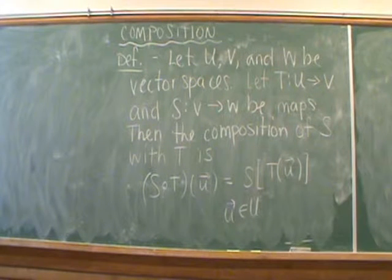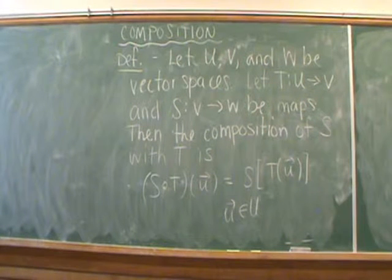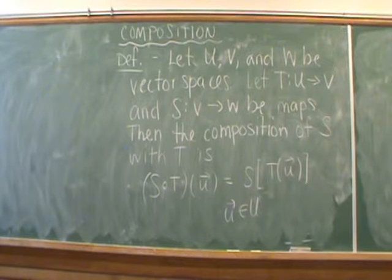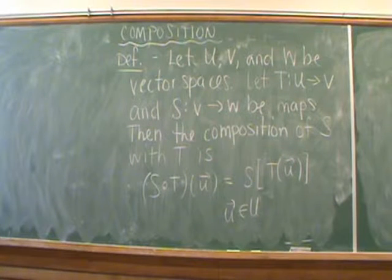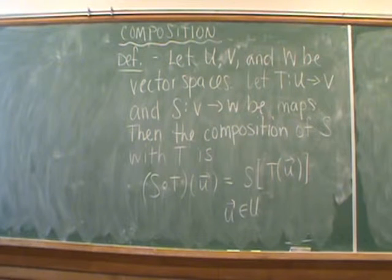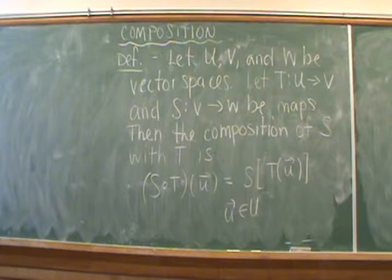Next we'll learn about composition of transformations. As a definition, we take three vector spaces U, V, and W, and let T and S be maps where T maps from U to V and S maps from V to W — T and S may or may not be linear transformations. We define the composition of S with T as follows: S circle T of a given element of U is equal to S evaluated at T evaluated at u. It's the same idea as function composition from calculus.